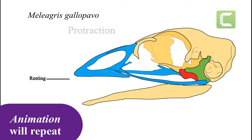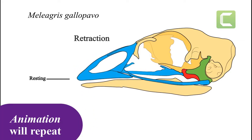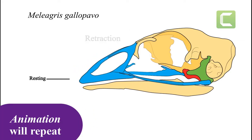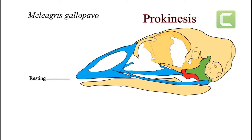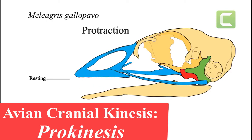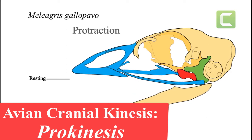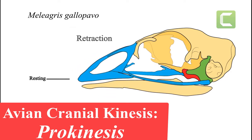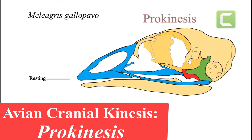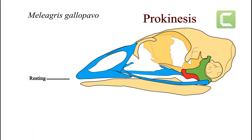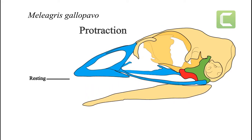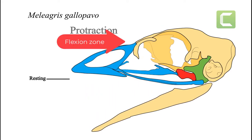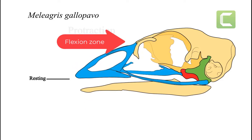This brief video will play repeatedly as I explain avian cranial kinesis. Most bird species are characterized by a type of cranial kinesis called prokinesis, where the upper beak flexes in relation to the cranium, which is stable and doesn't move. A unit of bones shown in blue is said to bend upwards at a flexion zone between the upper beak and cranium.